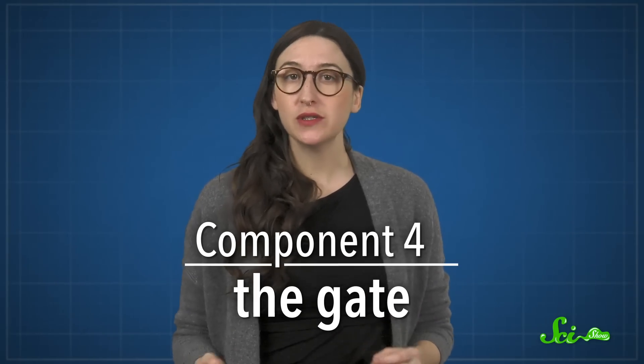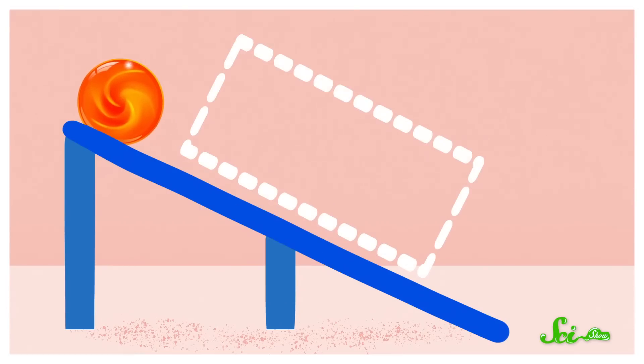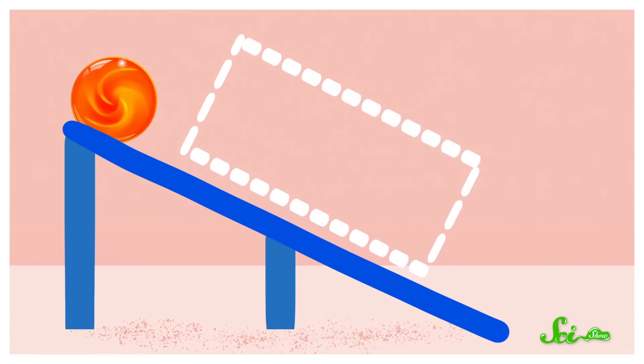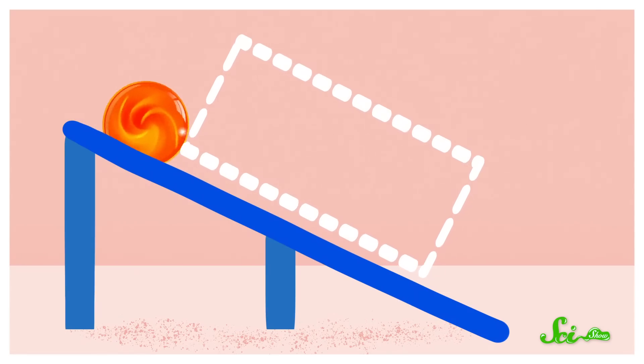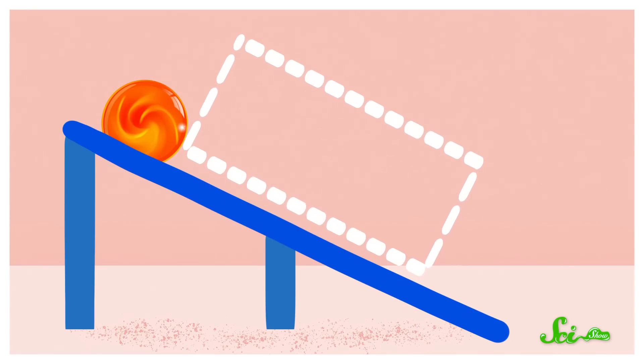Just above the channel is the final component: the gate, which switches the transistor on or off. When the gate is off, its electric field creates a barrier in the channel — the field pushes electrons away, leaving a sort of dead zone that electrons don't have the energy to pass through. So the channel acts like a track with a towel tossed over it; that marble is going nowhere. But when the gate is turned on, its electric field allows electrons to flow across the channel — it's like lifting the towel off to let the ball through.